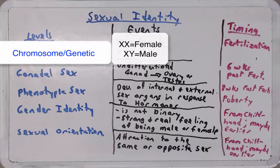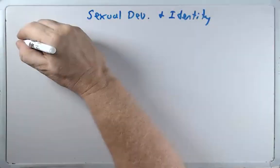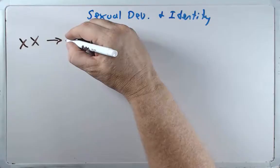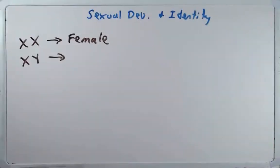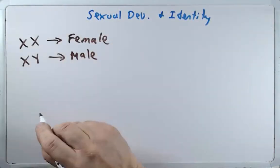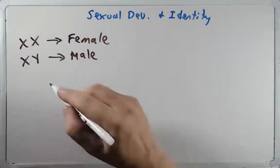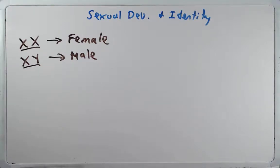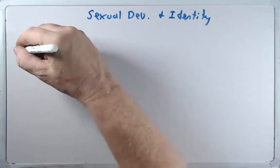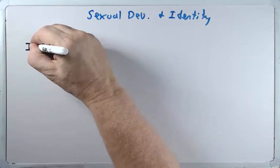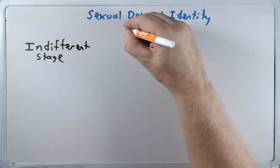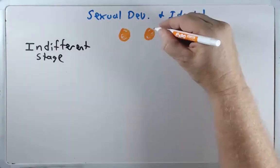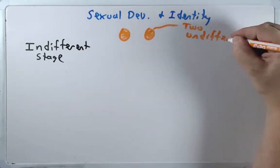Now we'll start talking about sexual development in more detail. Most of you already know that XX individuals are genetically female and XY individuals are typically male, though we'll talk about exceptions. But what is it about these chromosomes that helps develop a fertilized egg into a male or female? Early in sexual development, the structures we have are in what we call the indifferent stage. At this stage, the embryo has two undifferentiated gonads with the potential to become testes or ovaries.